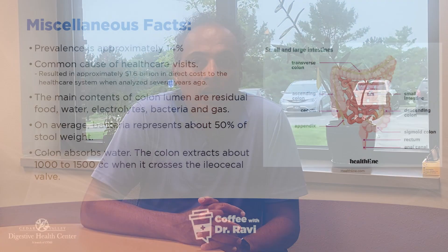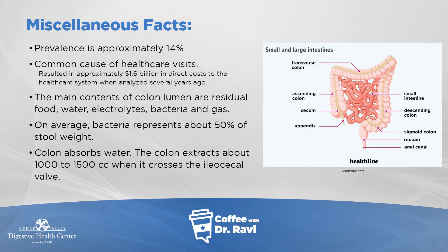The colon starts right at the anus and runs all the way across the top of the belly and goes down — it's a long tubular structure. The main contents inside the colon are food residue that's digested, some water, electrolytes, bacteria, and gas.